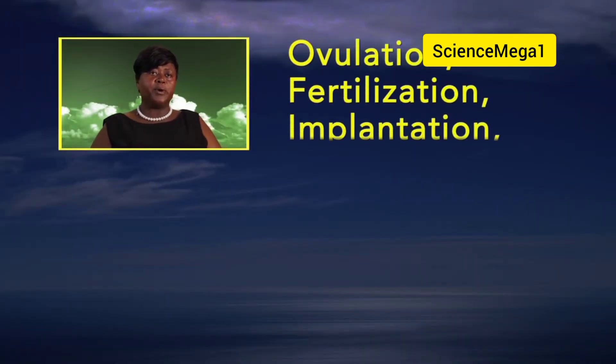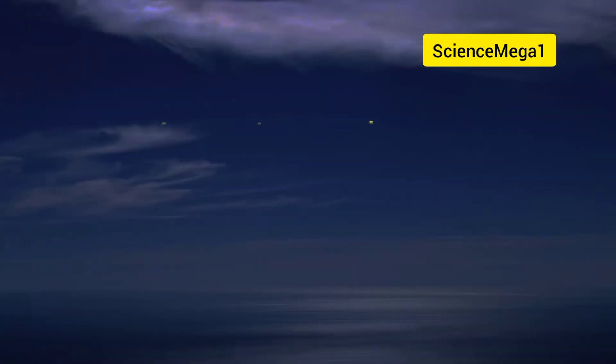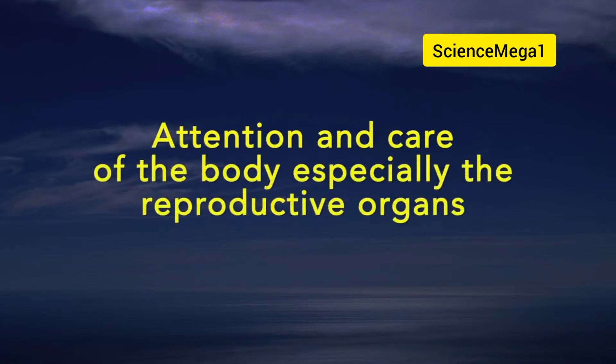Sexual intercourse does not automatically lead to pregnancy. Determining pregnancy involves several other processes, such as ovulation, fertilization, implantation, embryonic and fetal growth, before labor, delivery, and afterbirth. If determining pregnancy is this complex, how come a lot of young adolescents easily get pregnant? As common as pregnancy may occur, it involves so many complex processes that require attention and care of the body, especially the reproductive organs, so as not to jeopardize one's life. For detailed information on how pregnancies occur so often among young people, protection and health implications of the reproductive organs, join me as I switch over to our resource person.